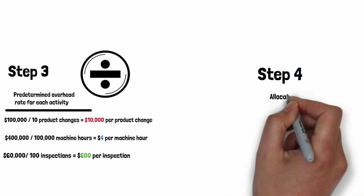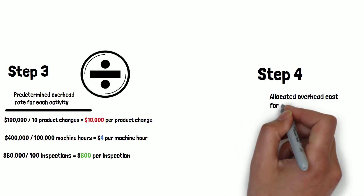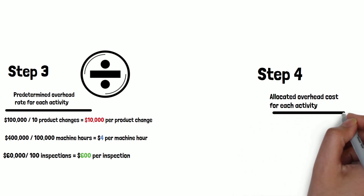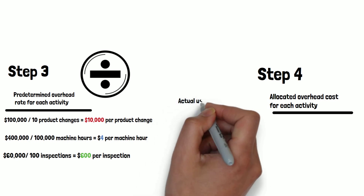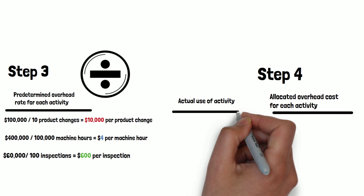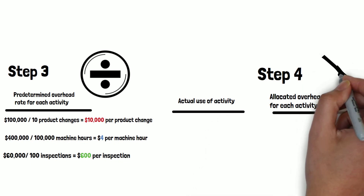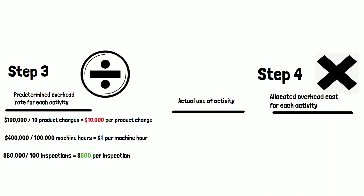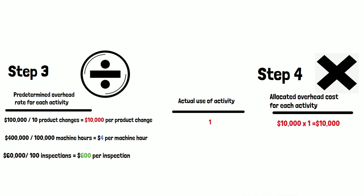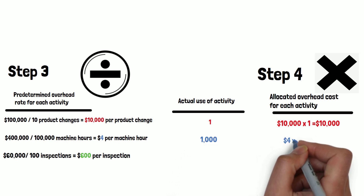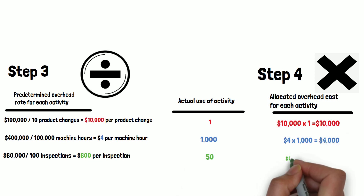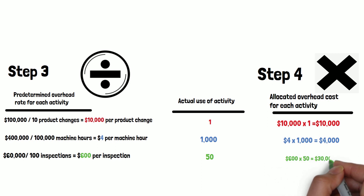Step four, we want to figure out the allocated overhead cost for each activity. We multiply the predetermined rate by the actual usage for this product. Assume there is 1 product change: $10,000 times 1 equals $10,000. Suppose there are 1,000 machine hours at $4 each — total $4,000. Suppose there are 50 inspections at $600 each — total $30,000.